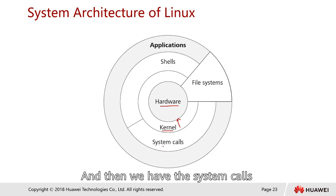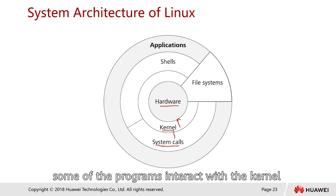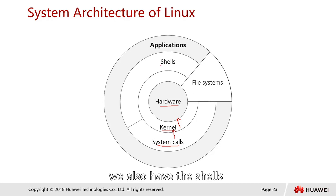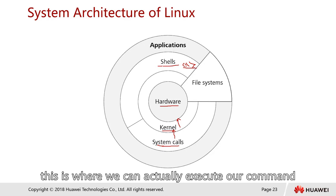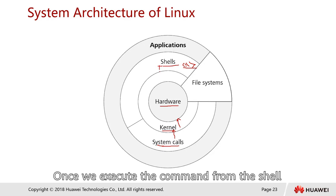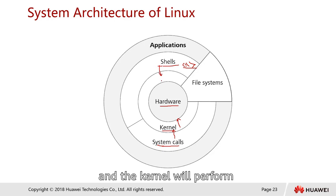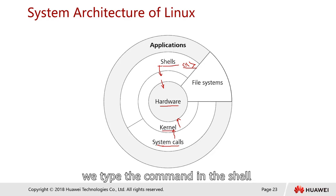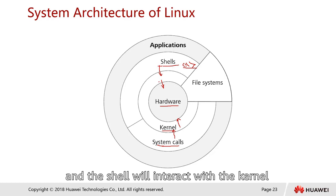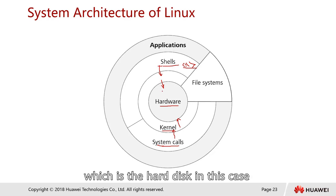We also have system calls — programs that interact with the kernel. The shell is essentially like a command prompt where we can execute commands. When we execute a command from the shell, we are instructing the kernel, and the kernel performs the translation to the hardware. For example, if you want to copy files from location A to B, you type the command in the shell, and the shell interacts with the kernel.